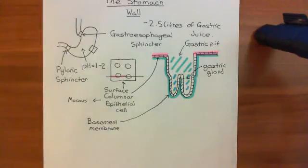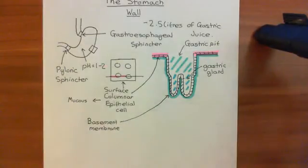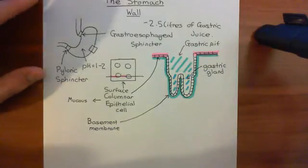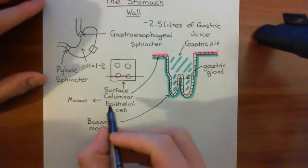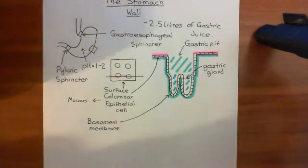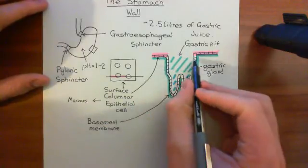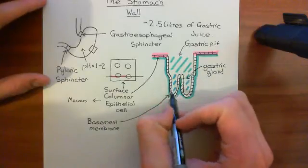Why do we have that incredibly low pH? Firstly, it's part of the innate immune system — if any bacteria come down into the stomach, they're going to get annihilated by a pH of 1 to 2. Additionally, it's also the optimal pH for the protease enzymes to function, which are going to digest the proteins within the food we consume. So these surface columnar epithelial cells — and not just the surface columnar cells, but all of the columnar epithelial cells — are going to be secreting mucus onto their surface.